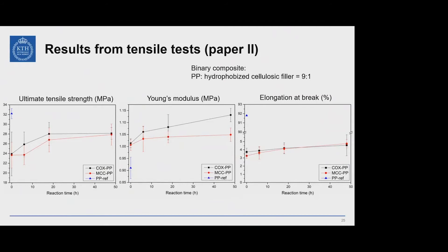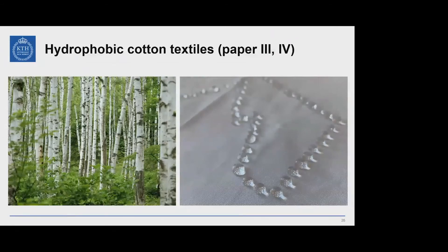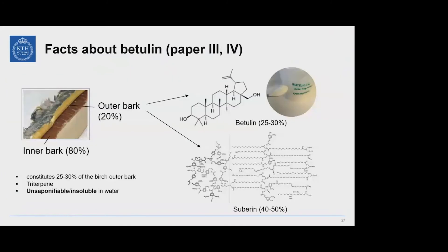Taking environmental issues into account, we also used natural compounds instead of synthetic ones to prepare hydrophobic textiles. The natural compound we used is called betulin. Birch trees are white in color because of betulin — it comes from the Latin name betula, meaning birch, and exists only in the outer bark. Its structure is triterpenoid and it is very insoluble, so it is undesirable in the paper industry.